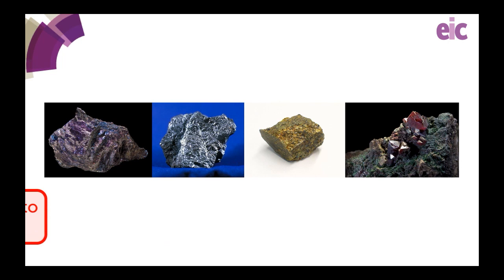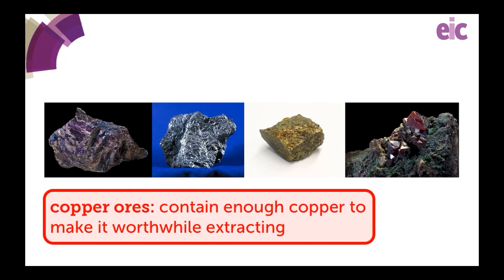We can't rely on just finding lumps of copper lying around, though. Copper occurs naturally in the Earth's crust as a range of compounds of copper with sulphur, oxygen and other elements. If there's enough copper to make it worthwhile extracting, the rock is known as an ore.